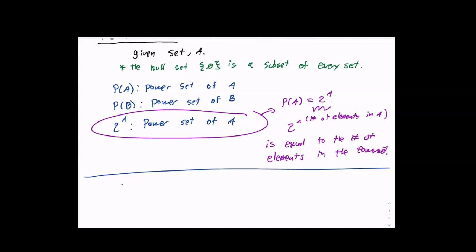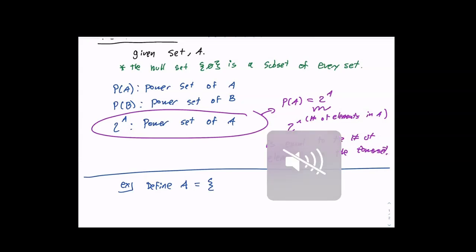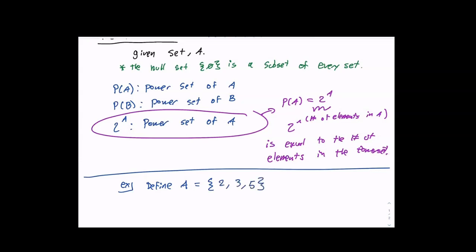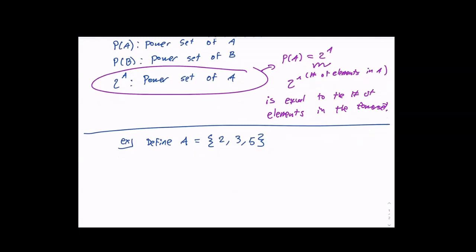Let's take a quick example. We'll define A as a set — and remember, sets can be numbers, letters, or words. Let's go with numbers. Give me three numbers. We'll use two, three, and five. So A is the set {2, 3, 5}, and we want to find P of A.